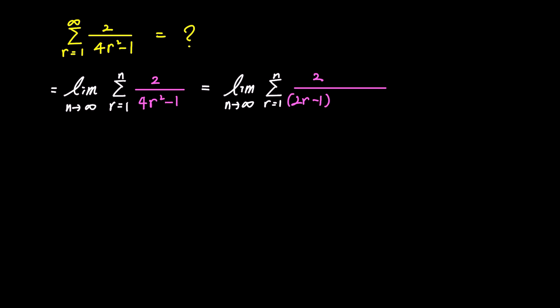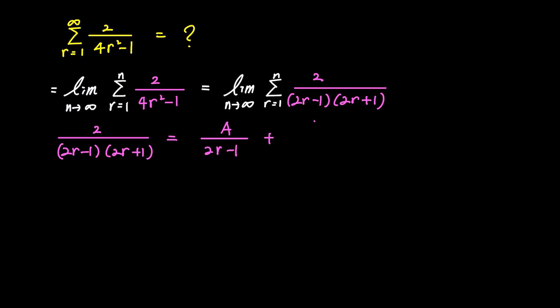The denominator 4r squared minus 1 can be factored as 2r minus 1 times 2r plus 1. To apply the cancellation technique of the telescoping series, we'll decompose this fraction into partial fractions. Thus, 2 over 2r minus 1 times 2r plus 1 can be expressed as a over 2r minus 1 plus b over 2r plus 1, where a and b are arbitrary constants.